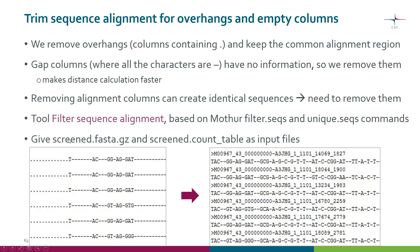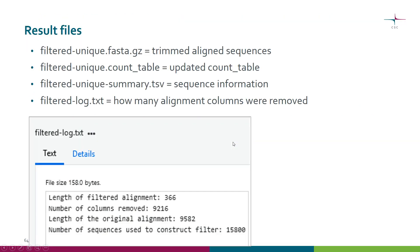As input you give the screened FASTA and the screened count table from the previous step. As result files you get the FASTA file, the updated count table, the summary file, and also a log file which tells you how many alignment columns were removed.